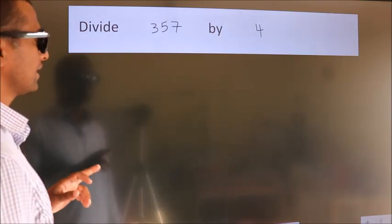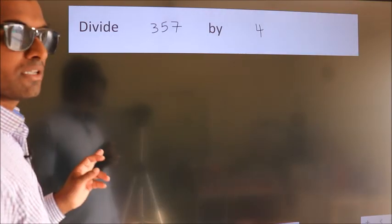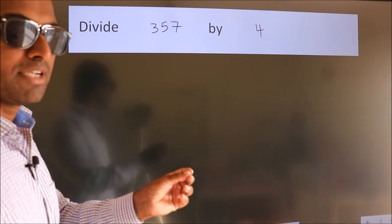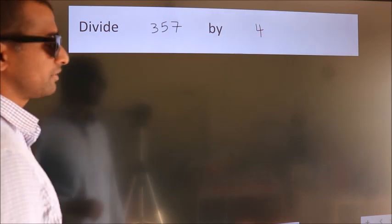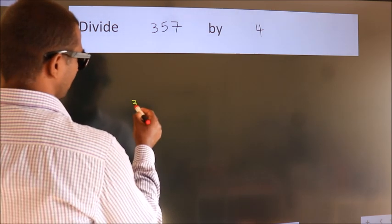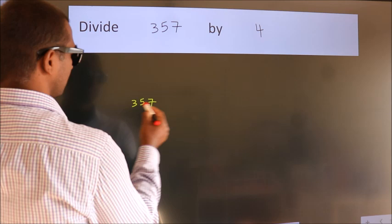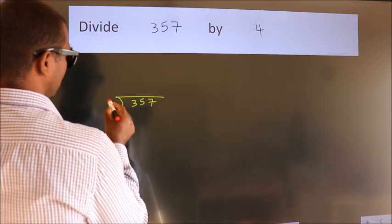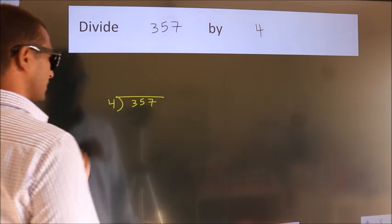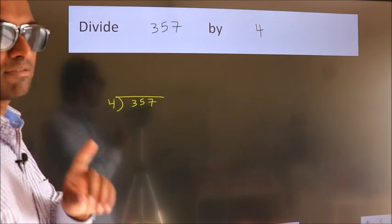Divide 357 by 4. To do this division, we should frame it in this way: 357 here, 4 here. This is your step 1.